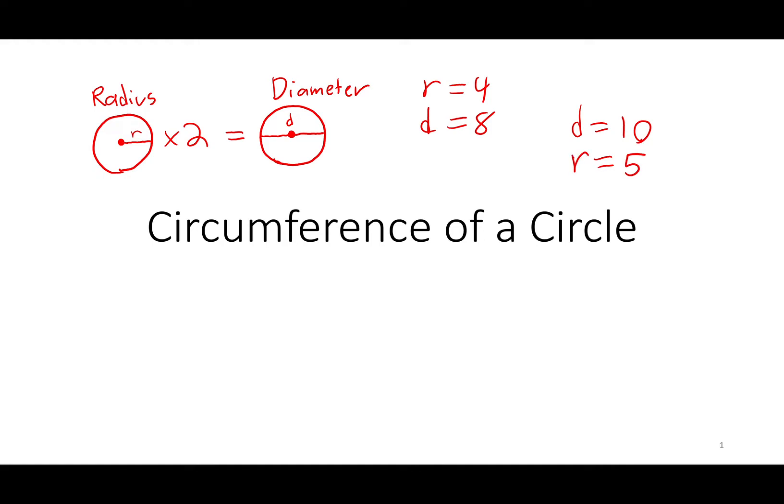You also remember that pi, this magical symbol, is always going to be 3.14. That never fluctuates. Another concept I want you to understand is the definition of circumference. Circumference is the distance around a circle. Think of circumference as the perimeter of a circle.